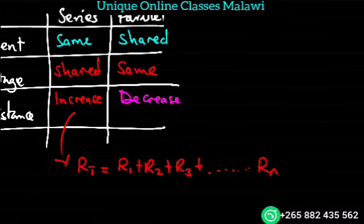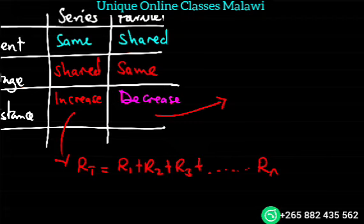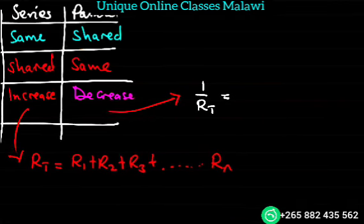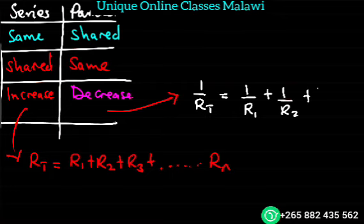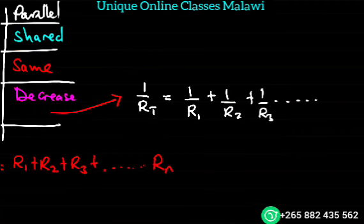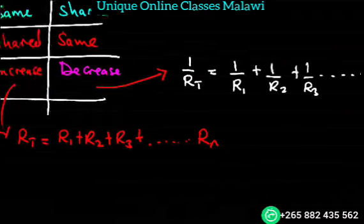Whereas in parallel, the formula for total resistance is: one over R_T equals the summation of my resistances. So it will be one over R1 plus one over R2 plus one over R3, and so on for each resistance.